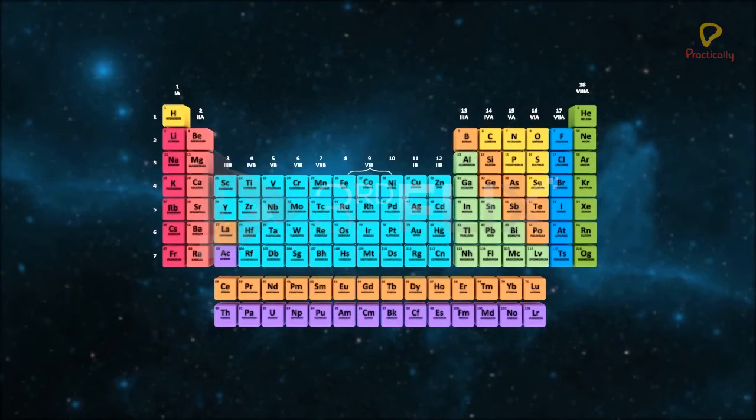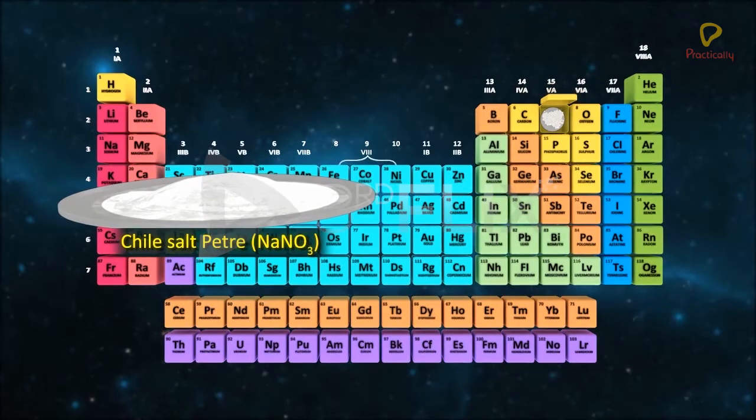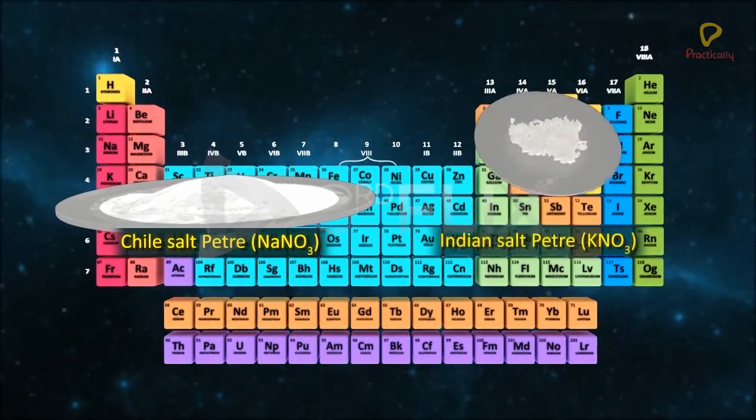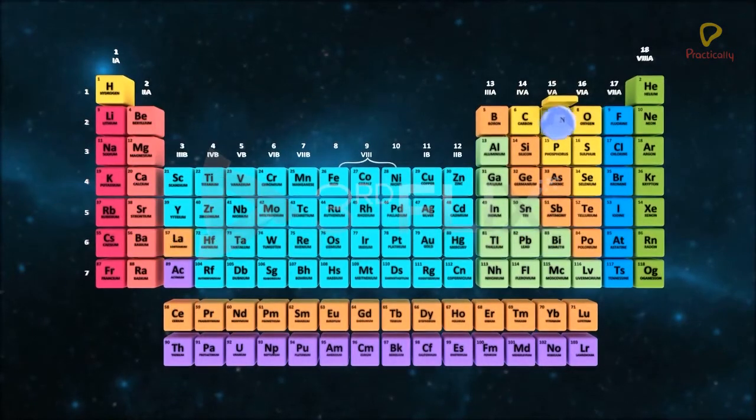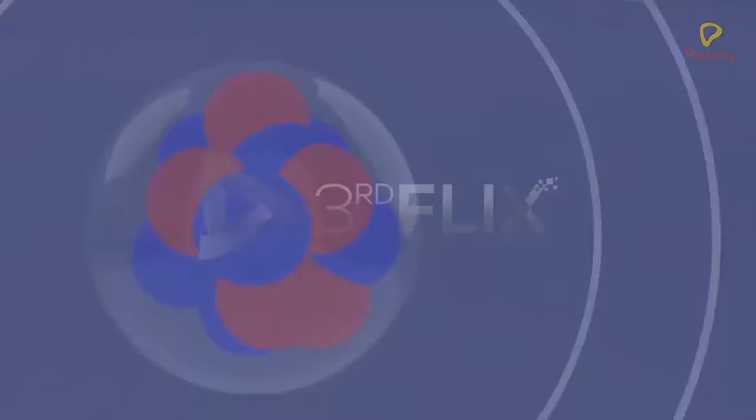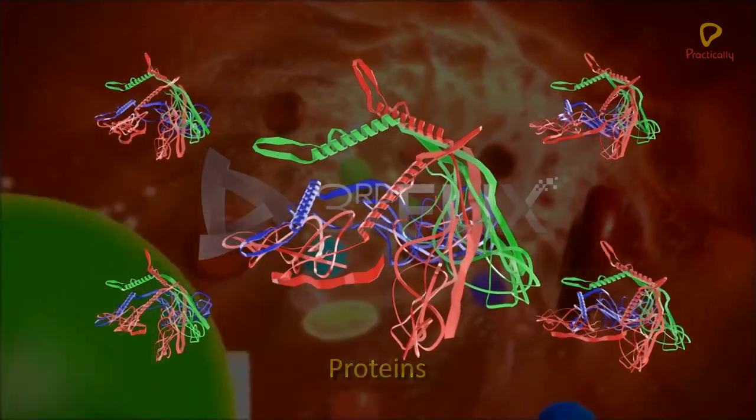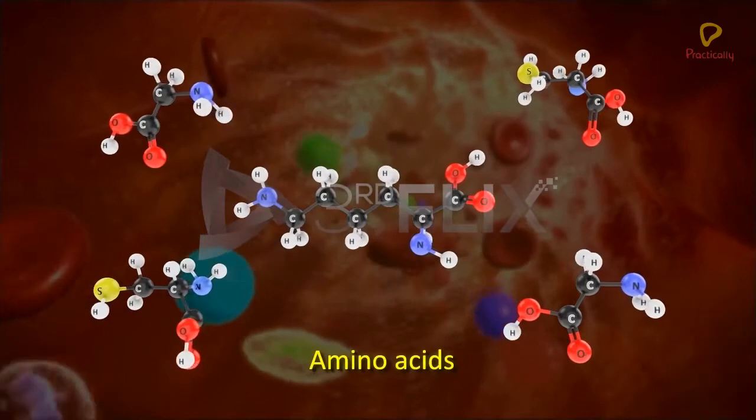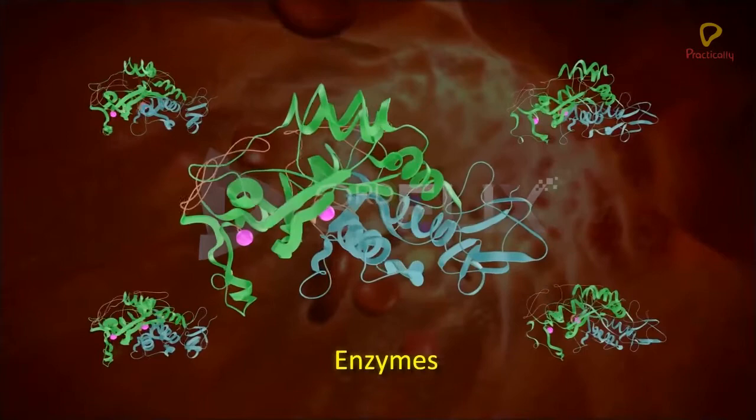In combined state, nitrogen mainly occurs in the form of minerals such as Chile Saltpetre, NaNO3, and Indian Saltpetre, KNO3. Nitrogen is also found as an essential constituent in proteins, amino acids, nucleic acids and enzymes.